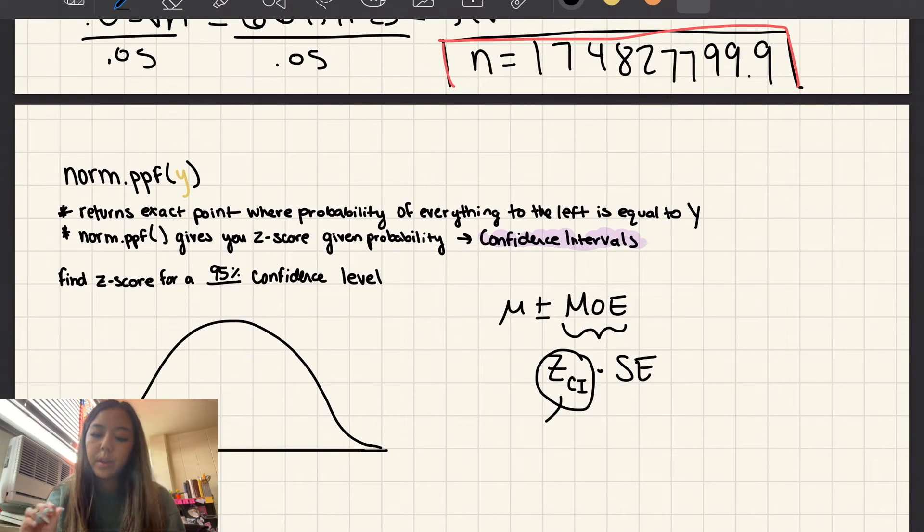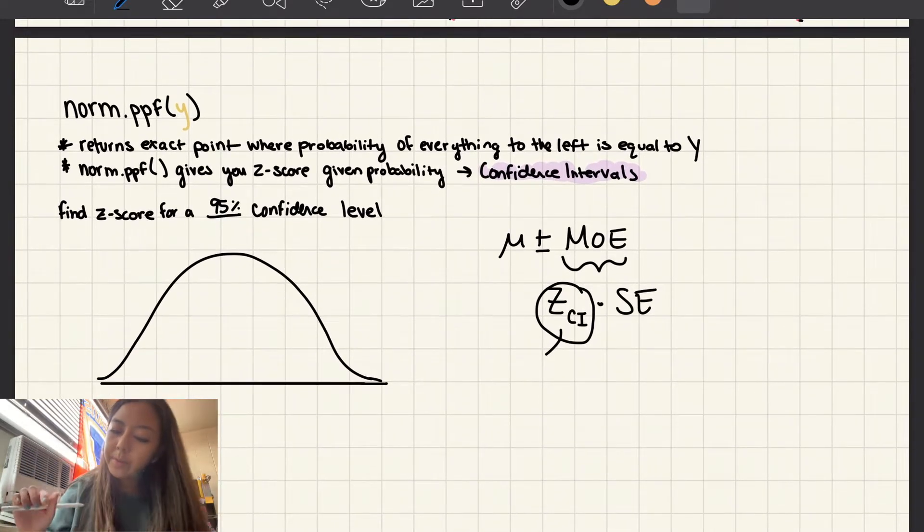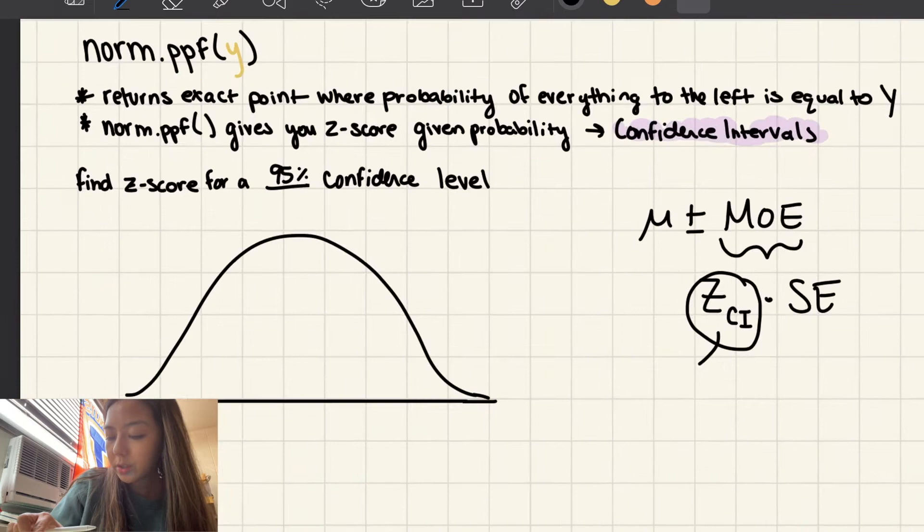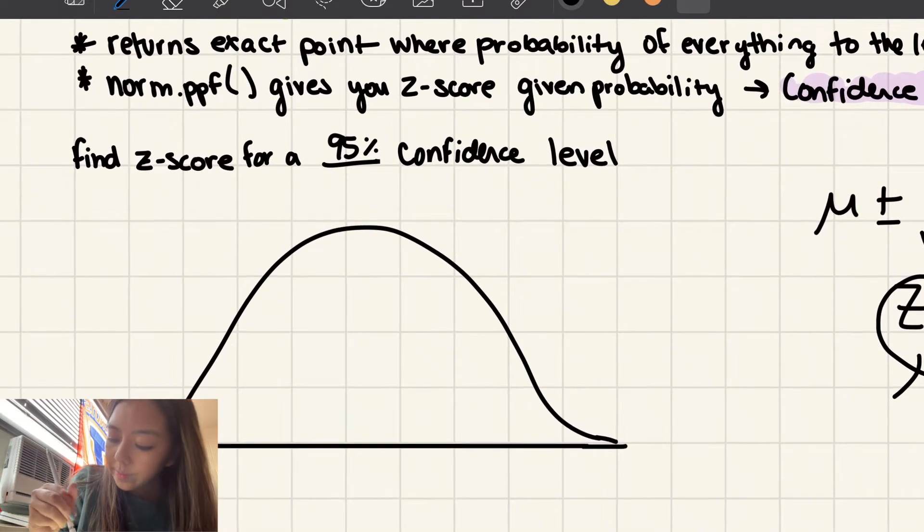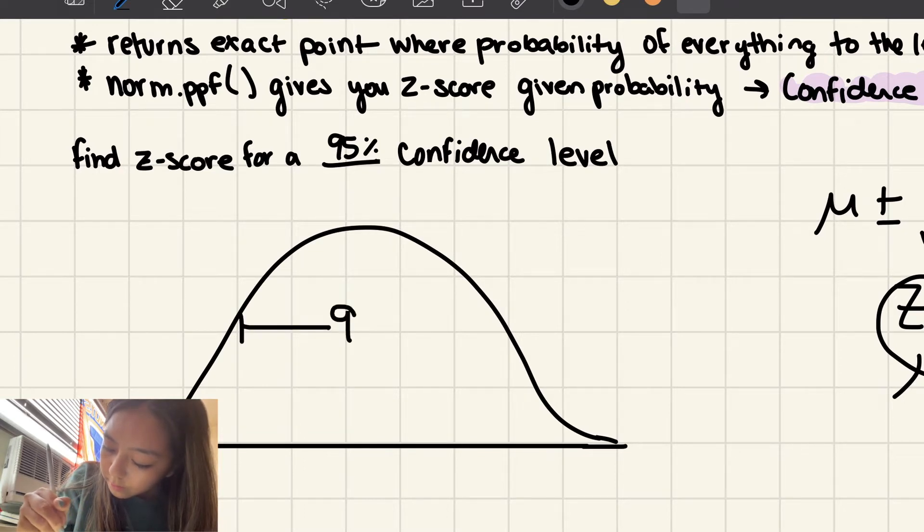So let's go through an example of just finding the z-score. Find the z-score for a 95% confidence level. So I have the normal curve right here because it's going to help us visualize what's going on. So when we say a 95% confidence level,